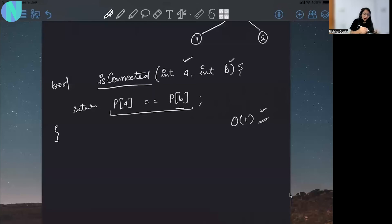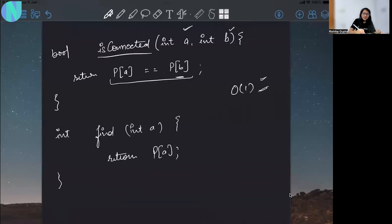If you have to create a find operation in this case, you will also create a function that basically will take the root parent of your element. So if it is int a, in the find operation you are going to simply return p of a. You will not have to do any recursion to get to the root parent. So this connected and find operation both will be O(1) or constant time complexity.